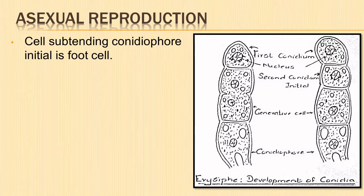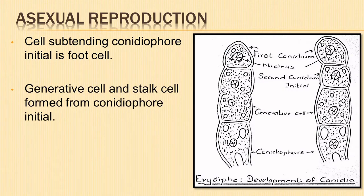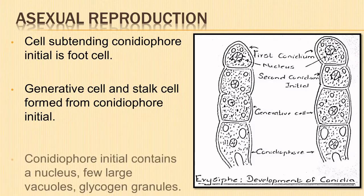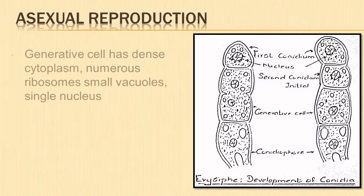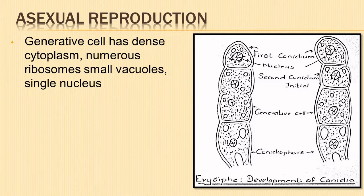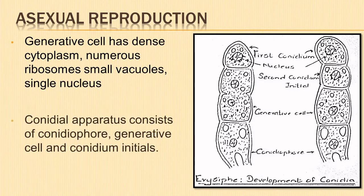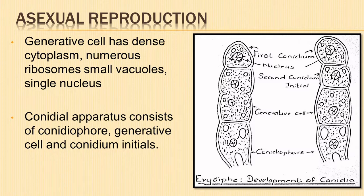A cross wall appears in the apical region of the conidiophore initial, dividing it into a short terminal generative cell and a basal long stalk cell. In a fully developed conidial apparatus, the conidiophore cell contains a single nucleus with a few large vacuoles. It may also contain glycogen granules. The generative cell has dense cytoplasm, numerous ribosomes, small scattered vacuoles and a single nucleus. The conidial apparatus consists of conidiophore, generative cell, and conidium initials.